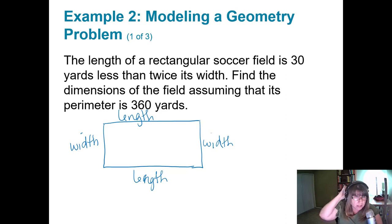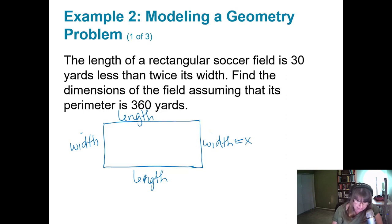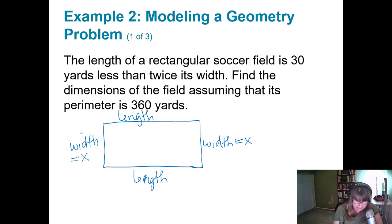Reading the first sentence again: the length is 30 yards less than twice its width. They told me nothing about the width, so I'll call that the unknown x. Wherever I see a width, I have x. I do know something about the length: it's 30 yards less than twice the width. Twice x is 2x, and 30 less than 2x is 2x minus 30. I have one length on each side.